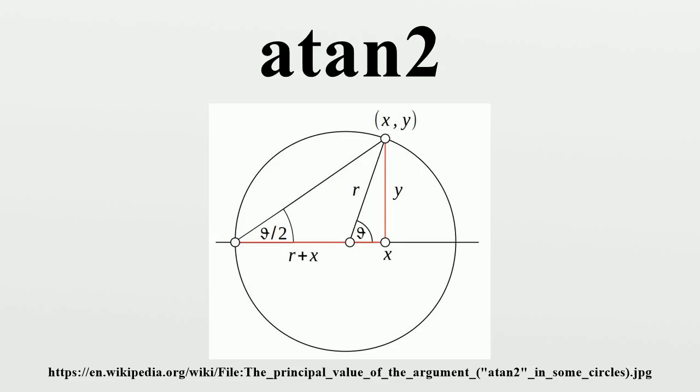The atan2 function takes into account the signs of both vector components and places the angle in the correct quadrant. Thus, atan2(1,1) equals π/4 and atan2(-1,-1) equals -3π/4. Additionally, the ordinary arctangent method breaks down when required to produce an angle of ±π/2. For example, an attempt to find the angle between the x-axis and the vector (0,1) requires evaluation of arctan(1/0), which fails on division by zero. In contrast, atan2(1,0) gives the correct answer of π/2. When calculations are performed manually, the necessary quadrant corrections and exception handling can be done by inspection, but in computer programs it is extremely useful to have a single function that always gives an unambiguous correct result.